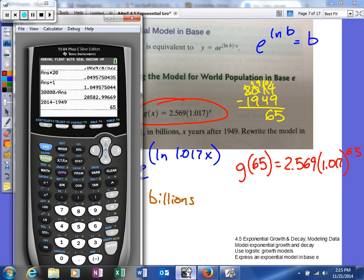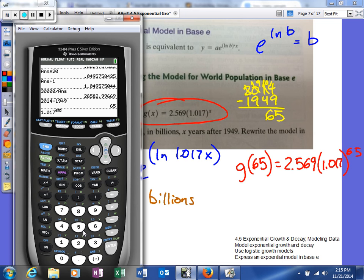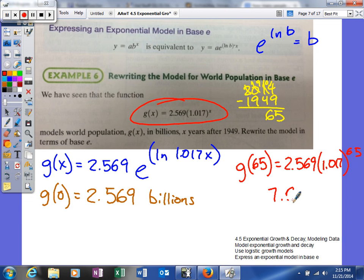All right, back to our calculator, and we'll see if that's going to work out for us. So 1 decimal 017 raised to the 65th power. And then we're going to multiply that by 2 decimal 569. And we get basically this. Looks like we'll do it to 3 decimal places. So 7 decimal 6, 8, 5. And again, this is in terms of billions, so it's actually going to be the value in billions.